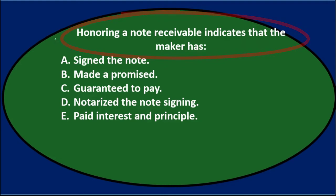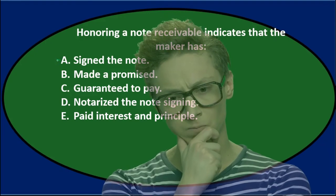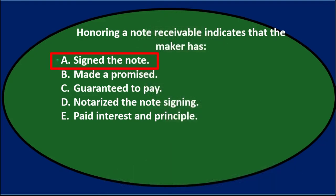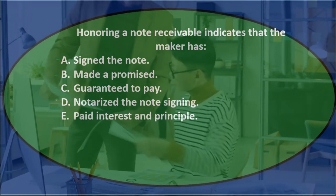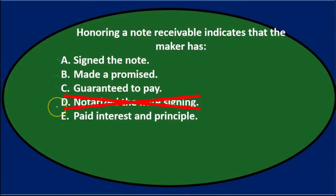Going through the process of elimination: A, signed the note — if you don't know what honoring means, you might think signing seals the deal, so I'll keep that. B, made a promise — that's kind of what the note does. C, guaranteed to pay — again, that's what the note does. D, notarized the note — that involves a third party providing verification of the signature process; I'll eliminate D. E, paid interest and principal — that happens at the end of the note.